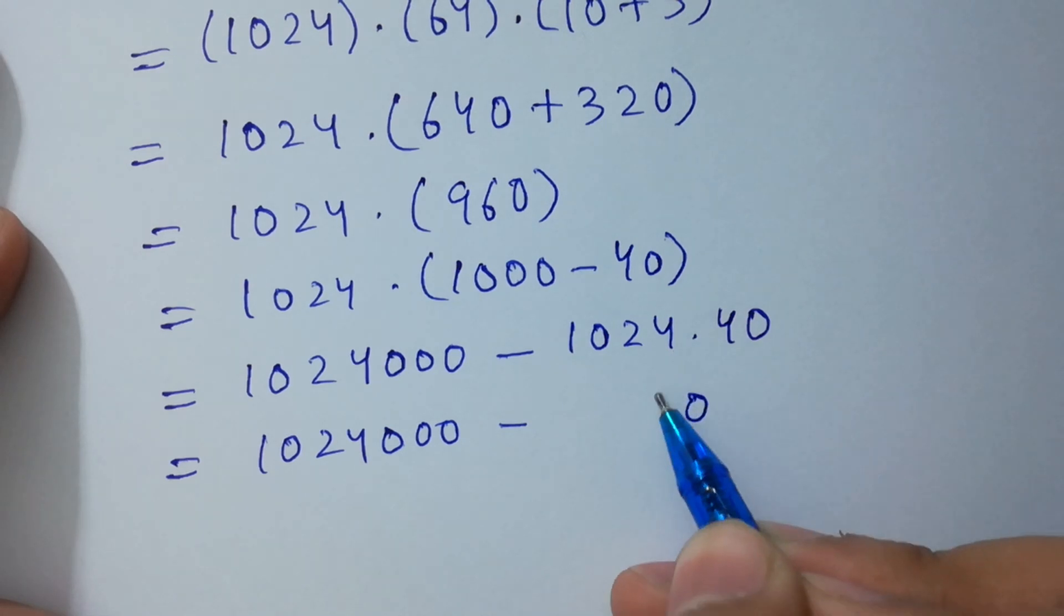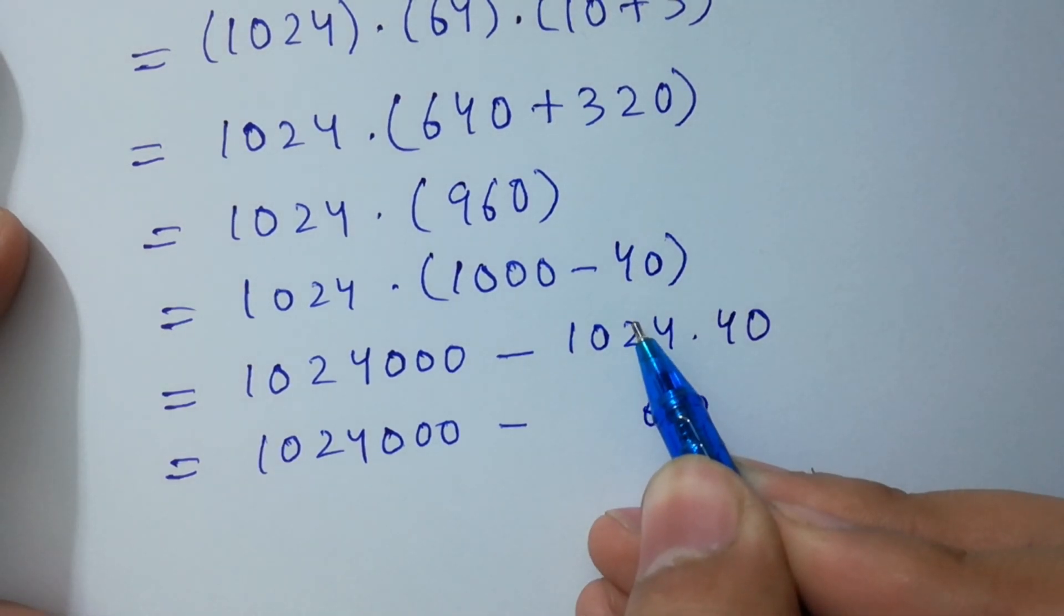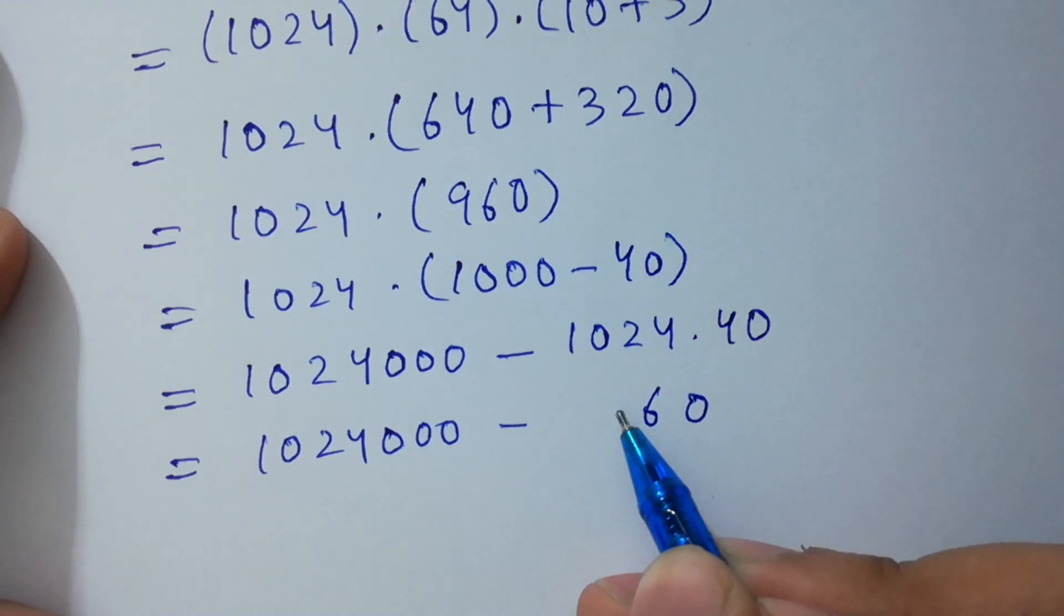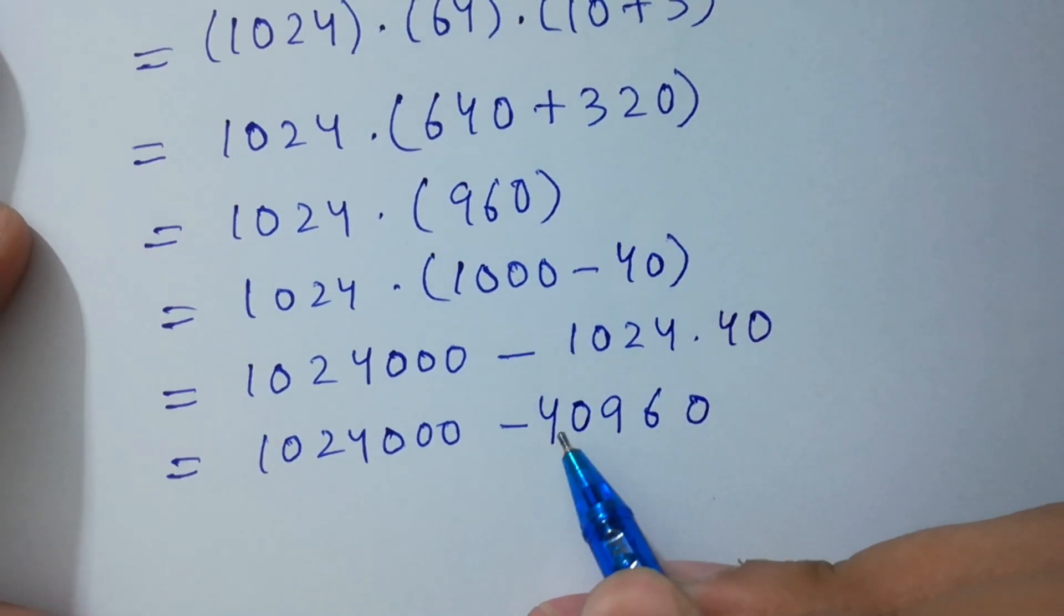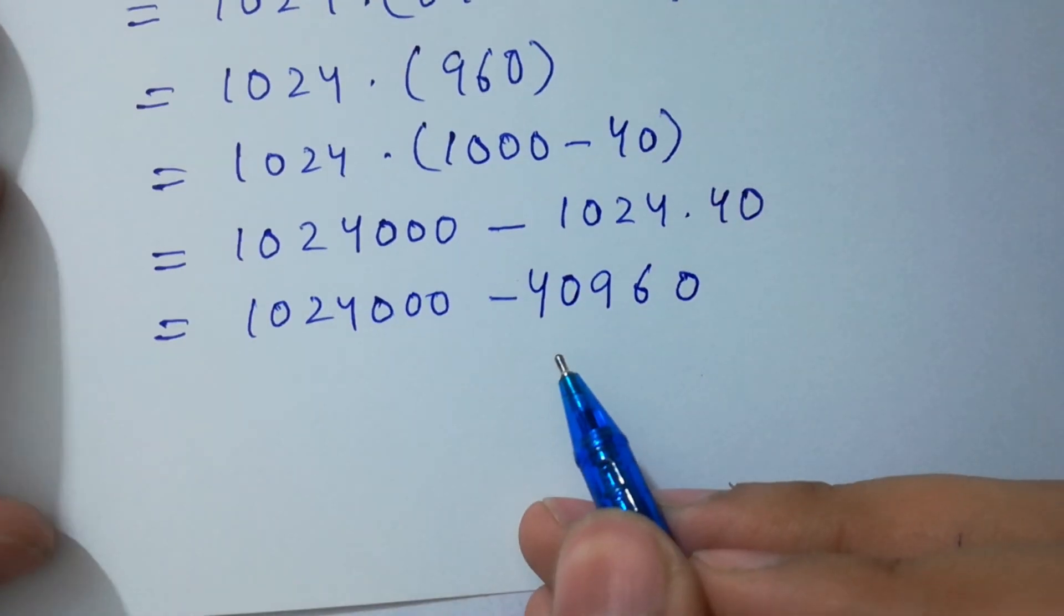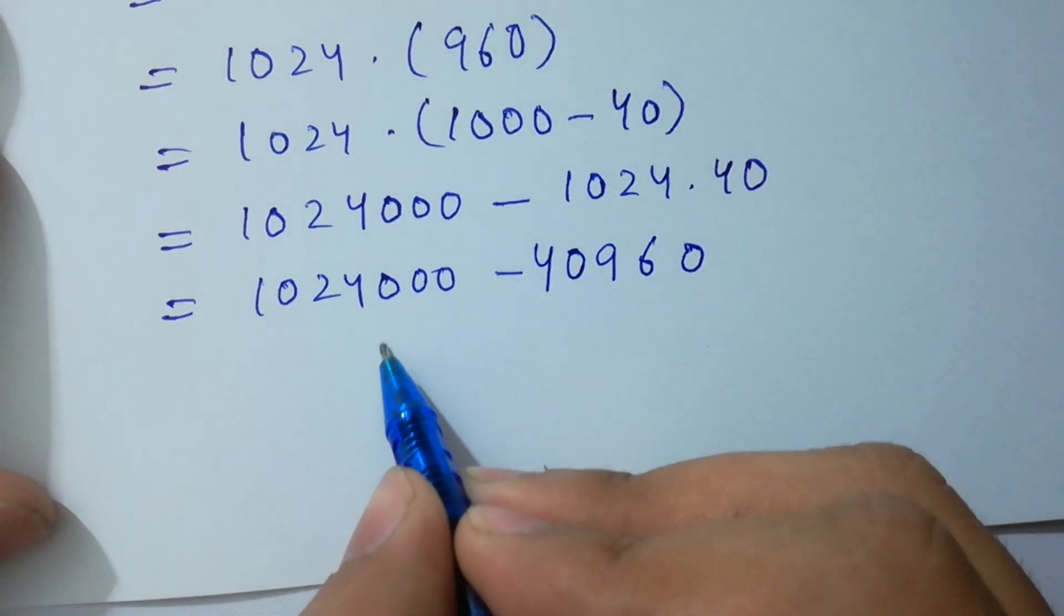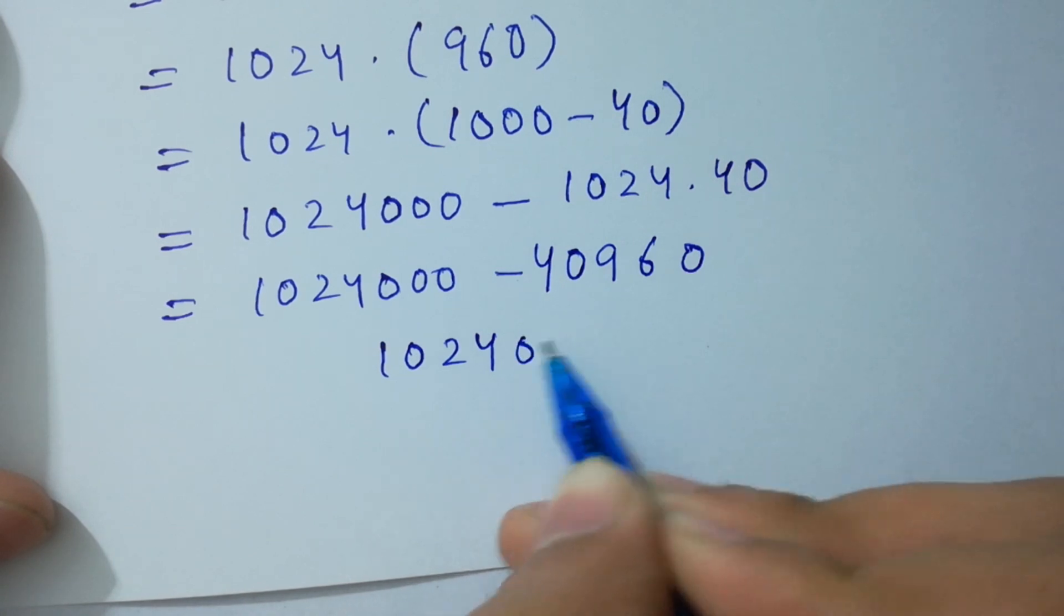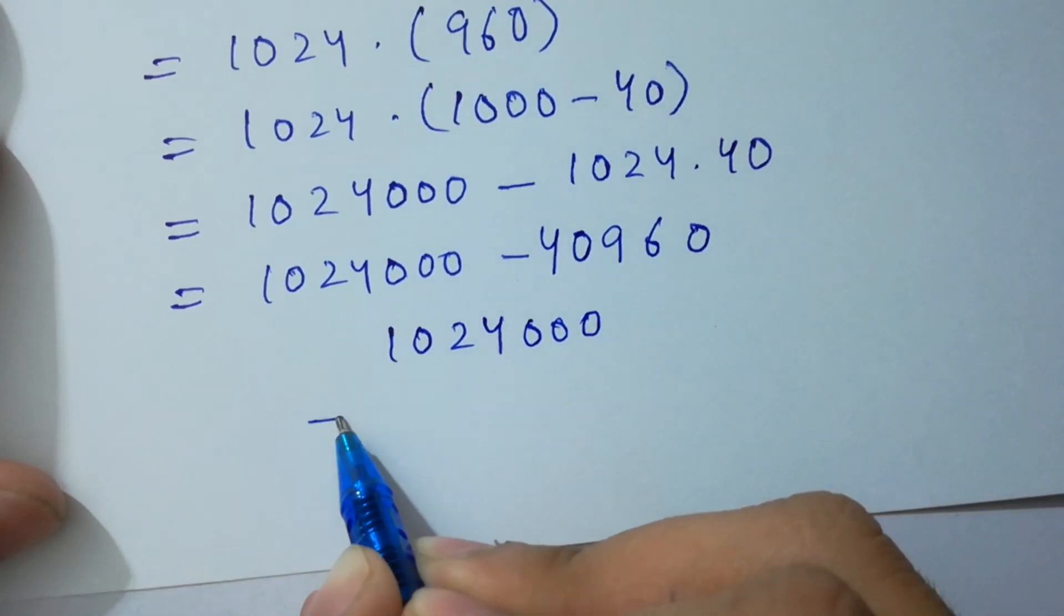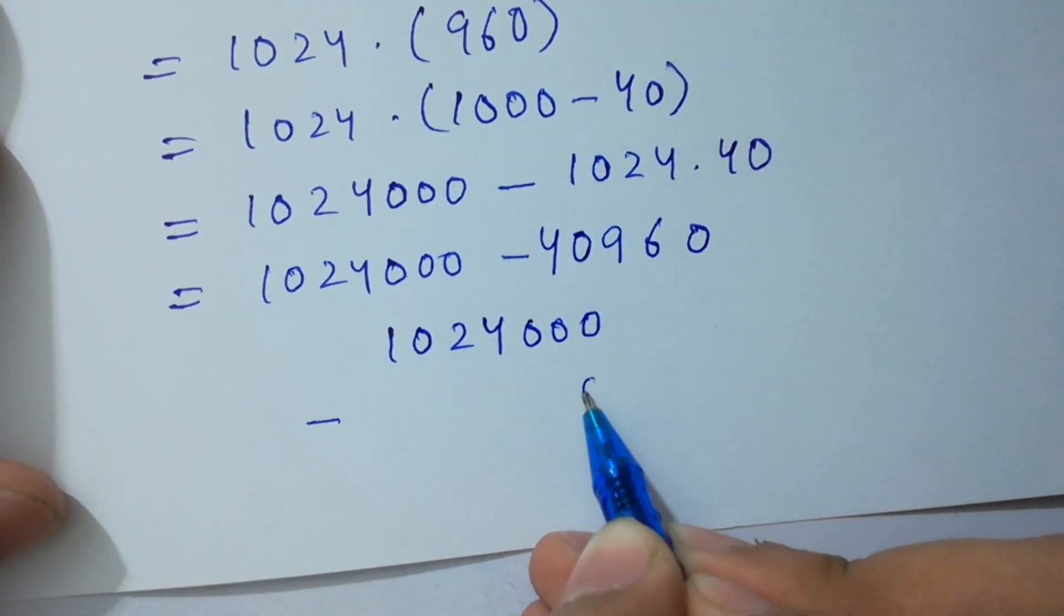1024 times 40: 4 times 4 = 16, write 6 and carry 1. Next, 4 times 2 = 8, plus 1 = 9. 4 times 0 = 0, 4 times 1 = 4. This gives us 40960.